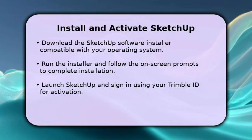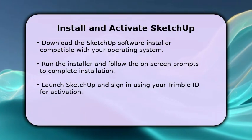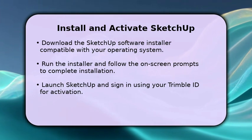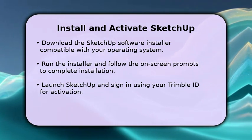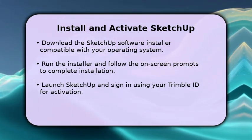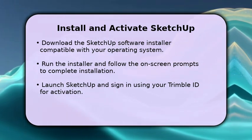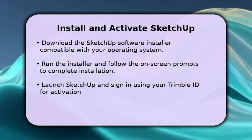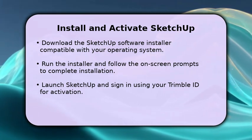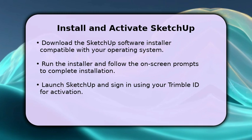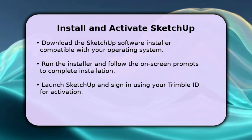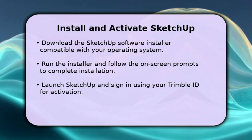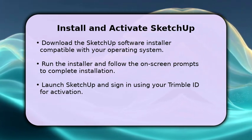The final step is to download, install, and activate your SketchUp software. From your Trimble account portal, download the correct installer for your computer's operating system. Run the installer, following the straightforward on-screen instructions. Once installed, launch SketchUp and sign in with your Trimble ID. This action automatically activates your license.